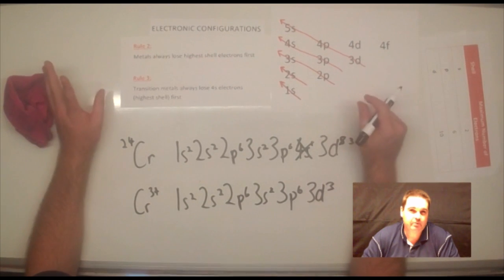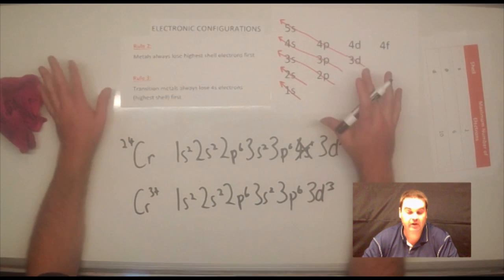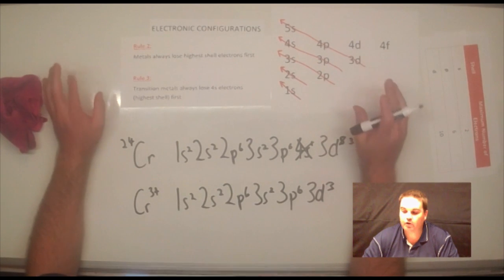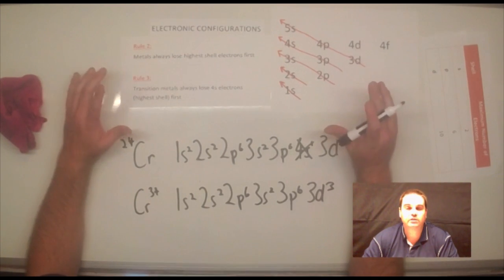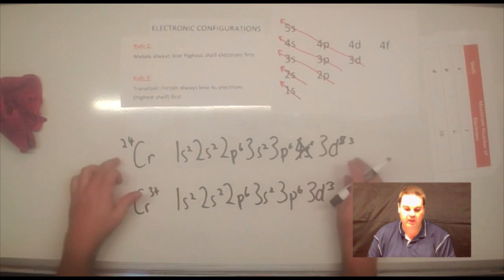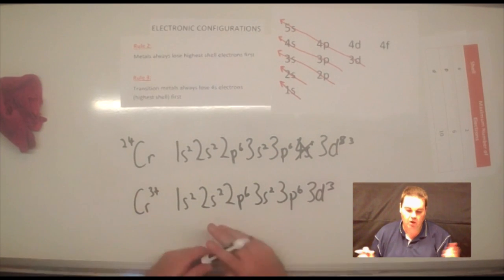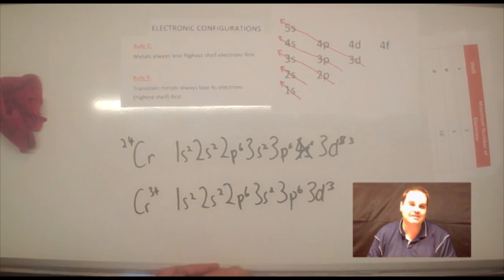It might take you a little bit of time to get the hang of these. So, practice and practice and practice them. You've got to go up to atomic number 32 to be able to do this, which is strontium. Make sure you can do them. Make sure you can do the ions as well. And practice chromium and copper. If there's any questions, just ask me. Thanks, guys.